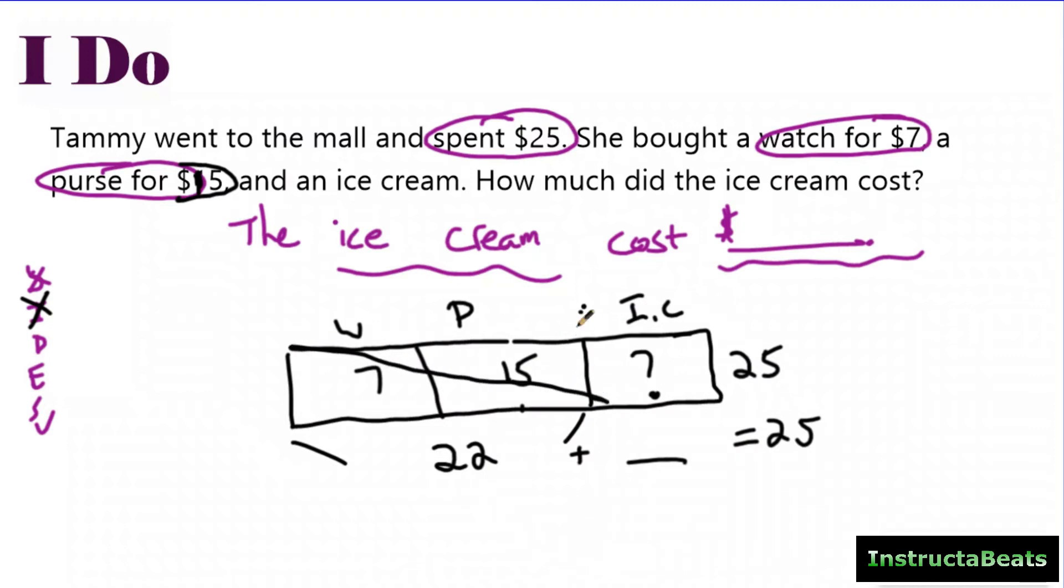And again, I want to get rid of the seven and the 15 to help me find this missing piece. So if I want to get rid of this from my tape diagram, that means I have to subtract it from my whole. And when you subtract it, you could do 25 - 22 = 3.